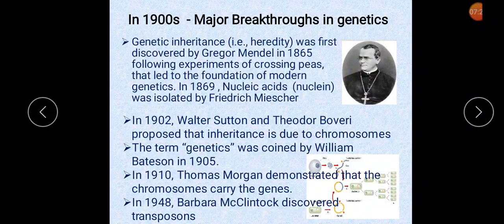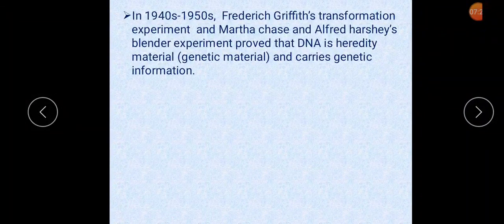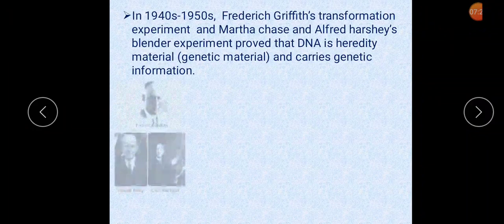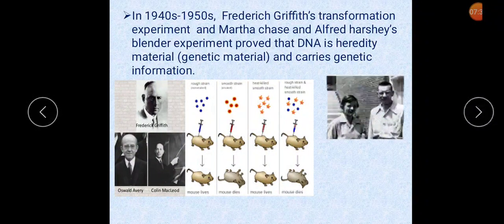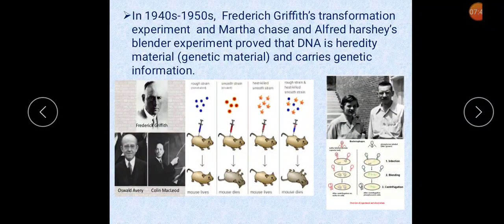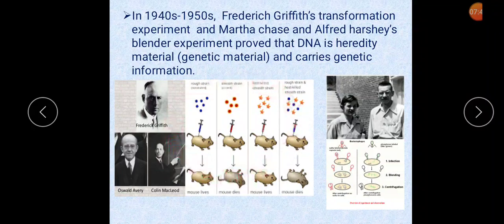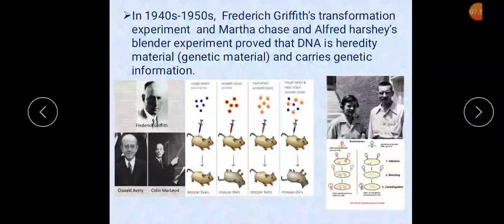In 1910, Thomas Morgan demonstrated that chromosomes carry the genes. In 1948, Barbara McClintock discovered transposons. In the 1940s and 50s, Frederick Griffith's transformation experiment and Martha Chase and Alfred Hershey's blender experiment proved that DNA is the hereditary material and carries genetic information.